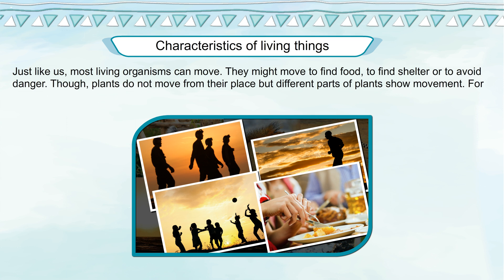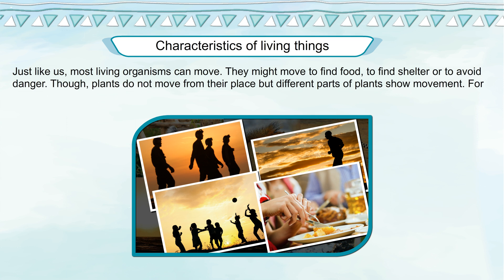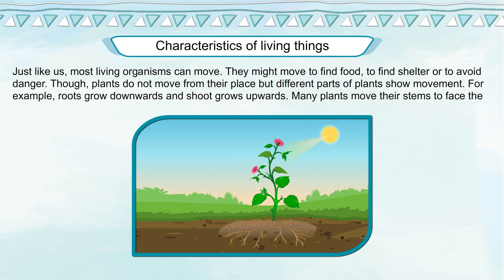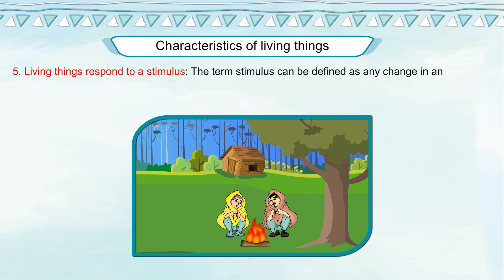Though plants do not move from their place, different parts of plants show movement. For example, roots grow downwards and shoots grow upwards. Many plants move their stems to face the sun. Some carnivorous plants move to trap prey.